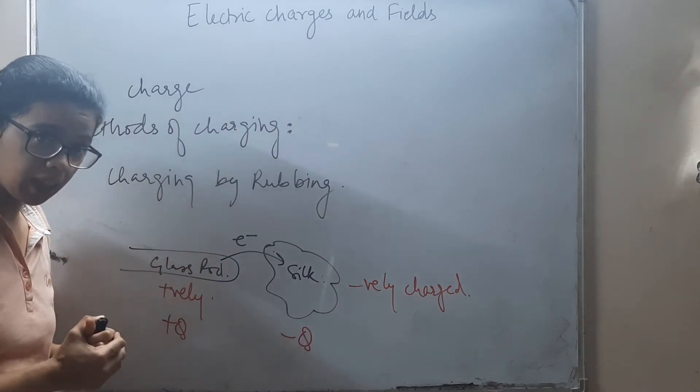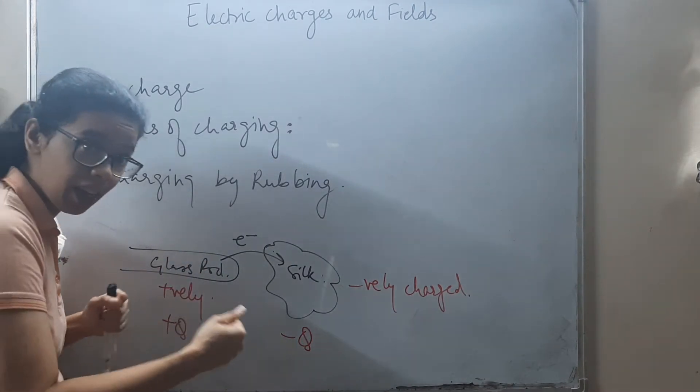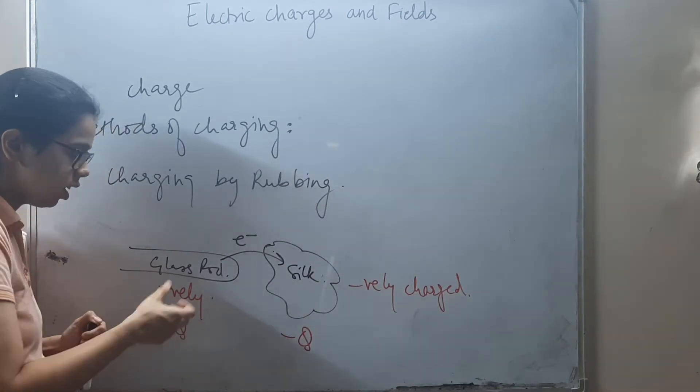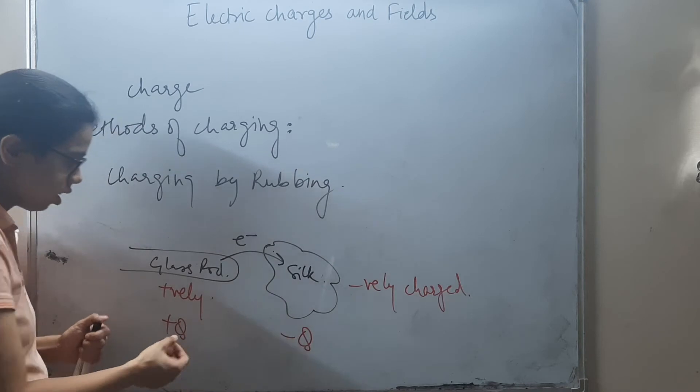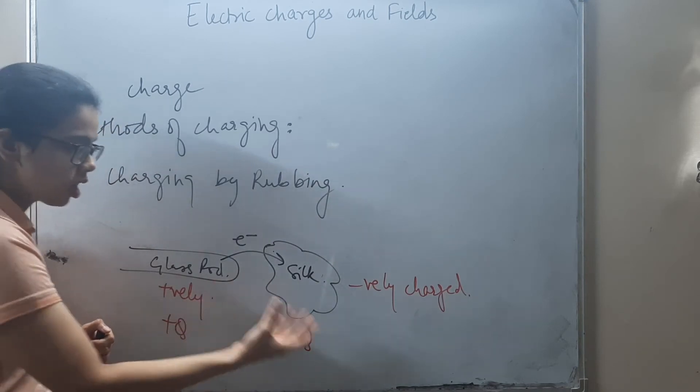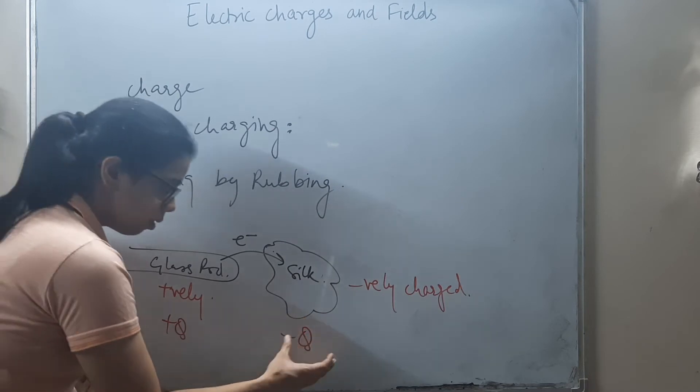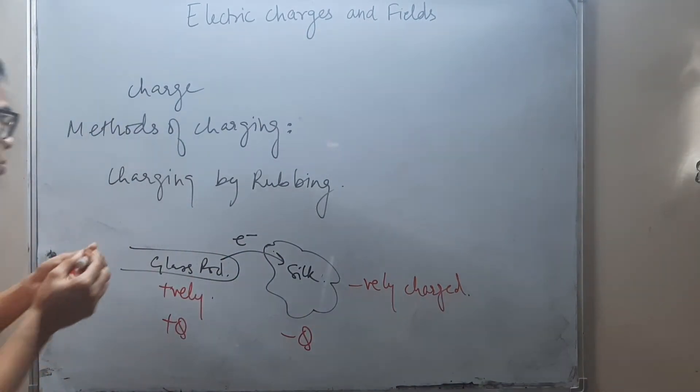The amount of positive charge in glass rod equals the amount of negative charge in silk cloth. So as we have seen, the charge is conserved. No charge is either created or destroyed. Only electrons are transferred from one body to another body.